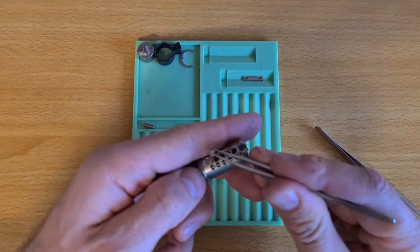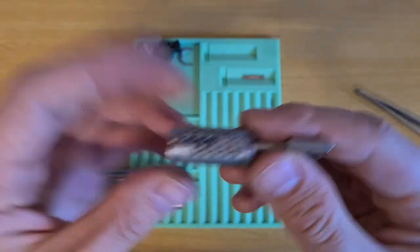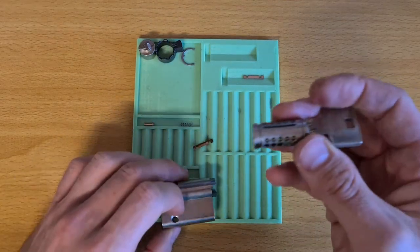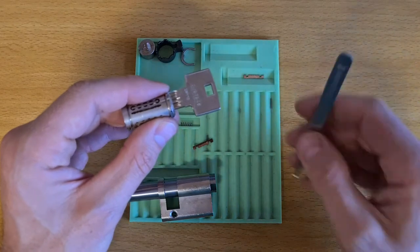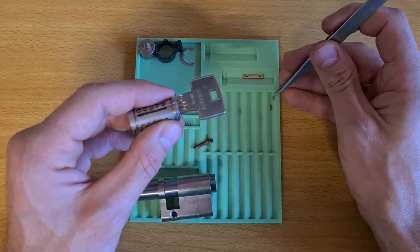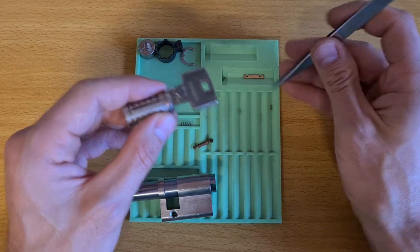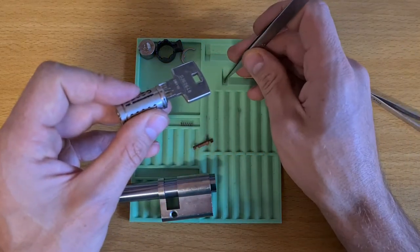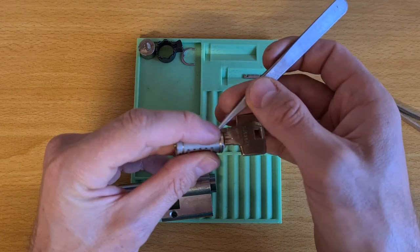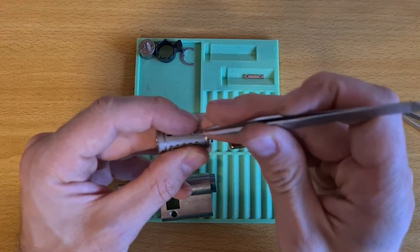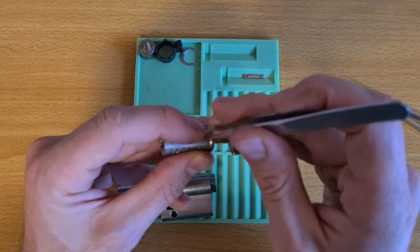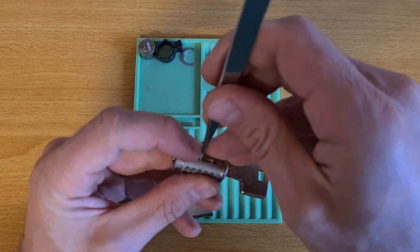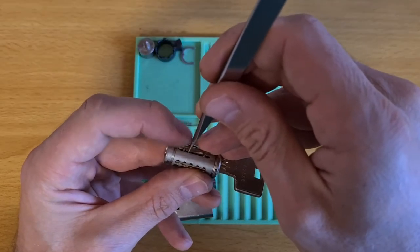Oh right, the sidebars. Here are the tiny springs that push the sidebars out. Here is one and here is the other one. The sidebars are symmetrical, they're identical. I don't think there's a difference which way you put them, which makes it easier. It's not the case with all locks - EVA 3KS and EVA ICS, you do have to pay attention which way they go, but not this one.